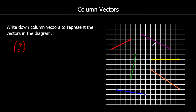This purple vector here goes along 1, 2, 3, 4, 5, 6, and down 3. So it goes along 6, so we write that as a positive 6. It goes down 3, so to show it's going down, we write it as negative 3. So 6, negative 3 means along 6, down 3.